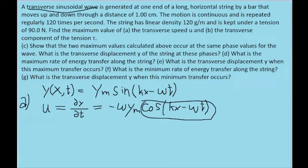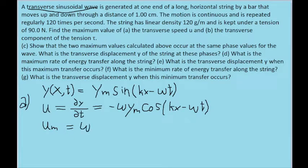We already know the maximum value will occur when the cosine function equals negative one — I say negative one instead of positive one because we need that negative to cancel the negative sign. So the maximum speed is negative omega times y_sub_m times negative one, which simplifies to omega times y_sub_m. The problem doesn't give angular frequency directly, but it gives standard frequency, and angular frequency equals 2*pi times the standard frequency.